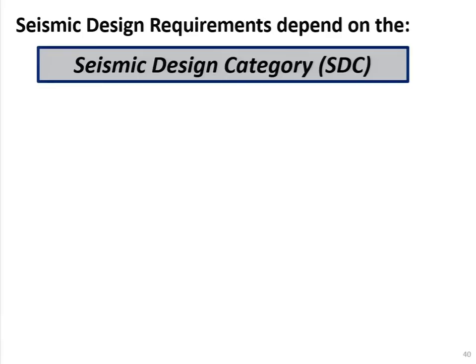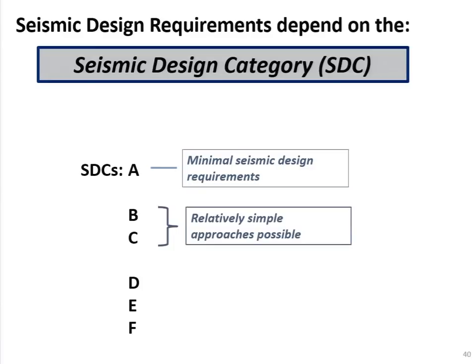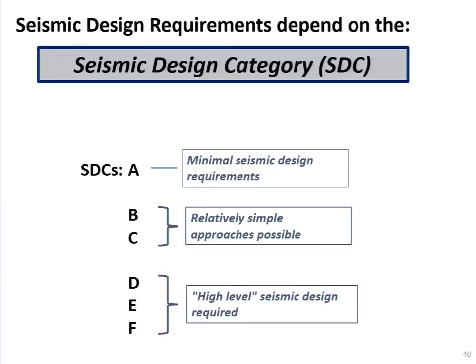In summary, seismic design category A — like Austin, Texas — means you do virtually nothing: just show you have a lateral system and resist some minimum lateral load. Categories B and C require calculating lateral forces but probably no ductile detailing. As soon as you're in D, E, or F, you're doing California high-level seismic design. There are many places outside California that trip into category D. For the actual analysis of buildings under earthquake loading, ASCE 7 offers three options: the equivalent lateral force method, modal response spectrum analysis, and seismic time history response analysis — linear or nonlinear.